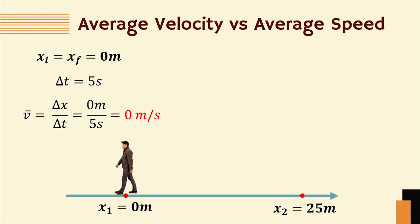However, your average speed is equal to 10 meters per second. Why? Let us apply the formula of the average speed. Average speed is equal to path length over elapsed time.